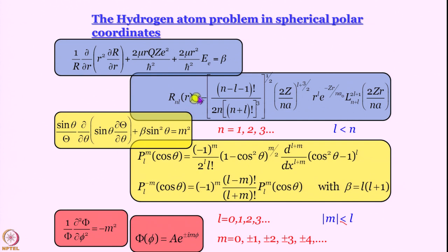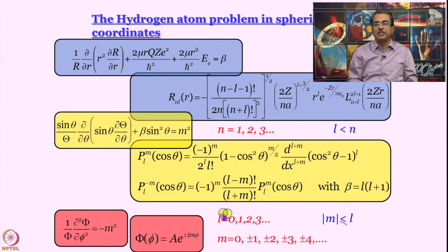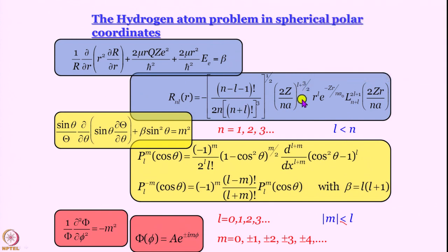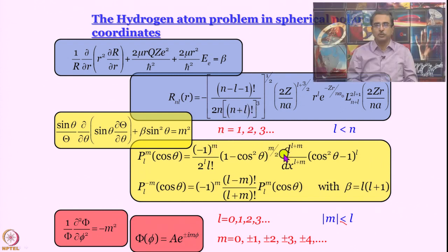We have not solved the r and theta dependent parts in detail, but we have told you what the wave functions look like. The theta-dependent wave function is essentially a polynomial in cos θ, called a Legendre polynomial. The r-dependent part is essentially a constant multiplied by r^l × e^(-Zr/na₀) multiplied by a Laguerre function, which is a polynomial. From the solutions of the radial part, we get the principal quantum number n = 1, 2, 3, and so forth.